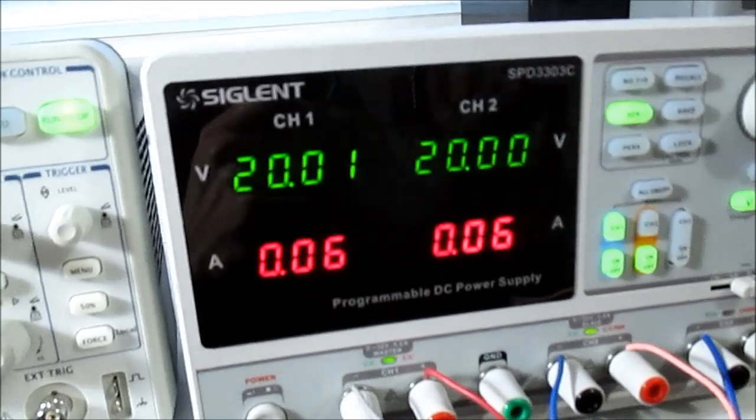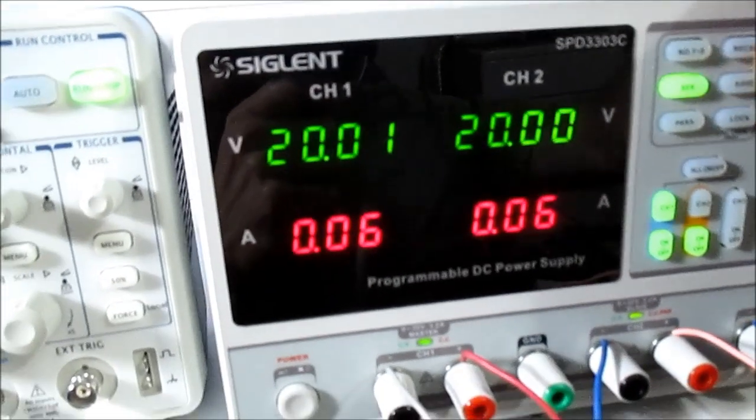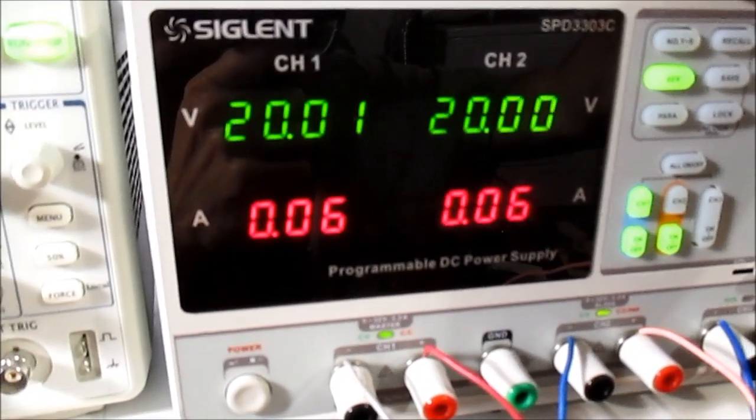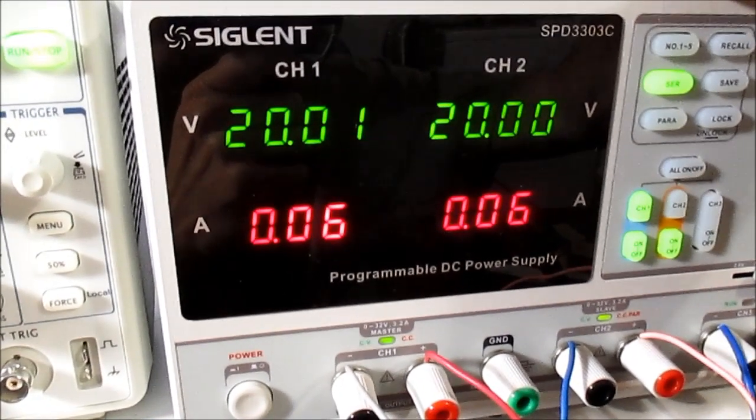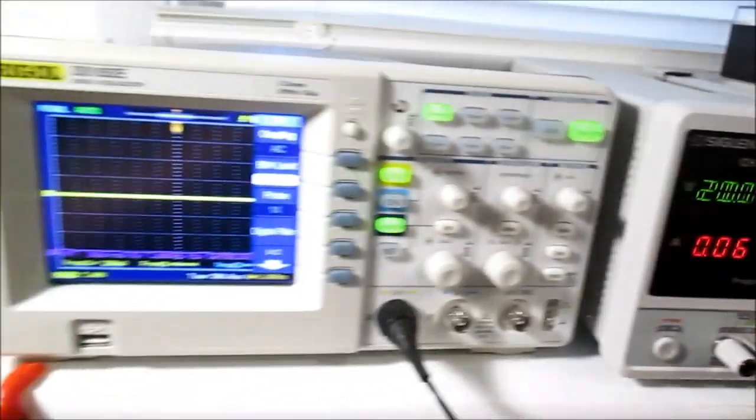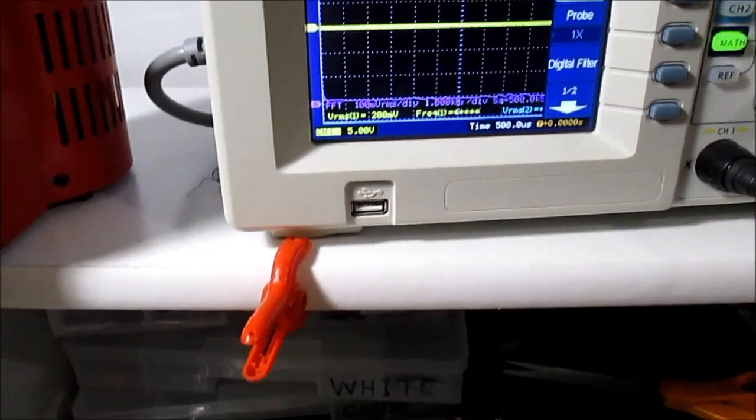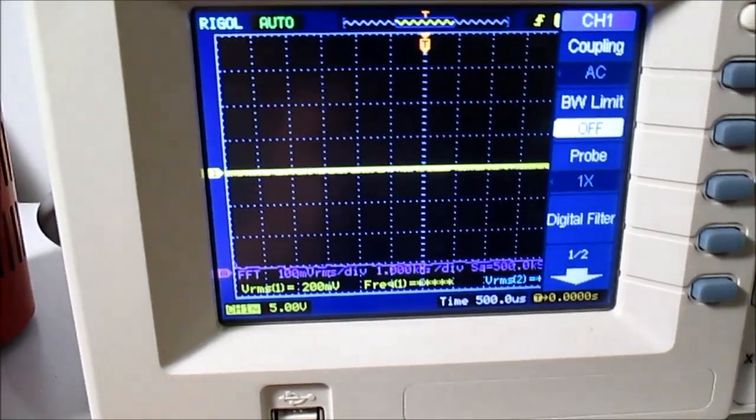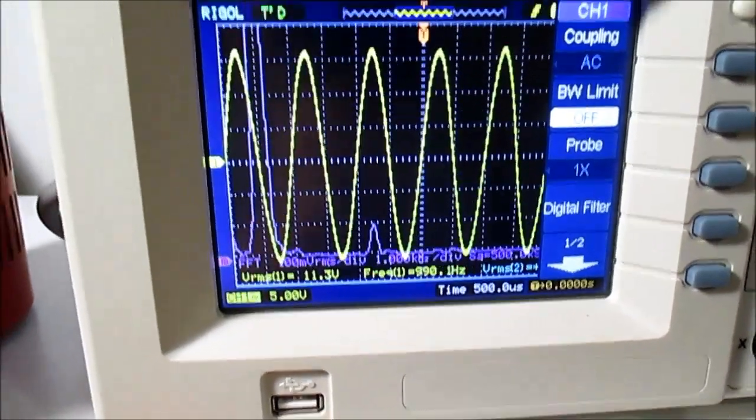I have the supply set for series mode so I can get a plus and minus output voltage. So we have 40 volts up now, and that would be plus and minus 20 volts, 40 volts total. Let's see what we get here. There we go.